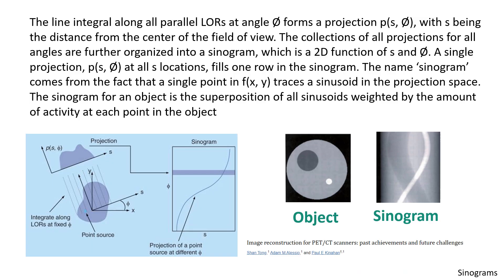All coincidences have to be organized to be used for image reconstruction. PET data are organized in sinograms. We consider the line integral along all parallel lines of response at a specific angle, forming a projection that depends on two parameters: the considered angle and the parameter S, which is the distance of each point in the projection from the center of the field of view. The projections at all angles around the object are organized into a sinogram, which is a 2D function of S and angle. Each projection is a line in the sinogram. The name sinogram comes from the fact that a single point traces a sinusoid in the projection space, so the global sinogram is the overlap of all sinusoids, each weighted by the amount of activity in each point.